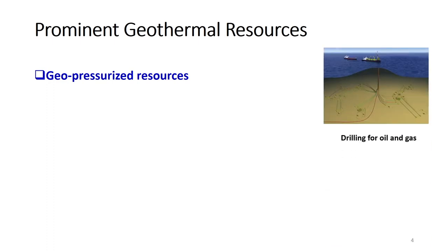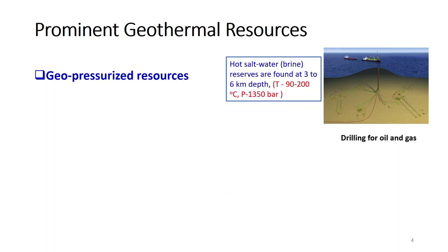Now let us move to geopressurized resources. While drilling for oil and gas, hot salt water reserves are found at depths of about 3 to 6 kilometers from the surface. The temperature varies from 90 to 200°C, but the pressure is tremendously high — from 1,000 bar to 1,350 bar.